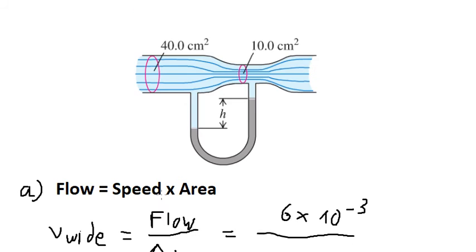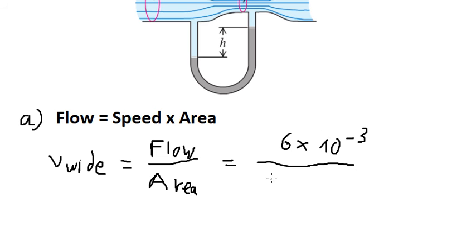So we have the area here. The area we have is about 40 square centimeters. So in this situation, we need to convert this one into meters. So we have 10 to the power of negative 4. And we got about 1.5 meters per second.